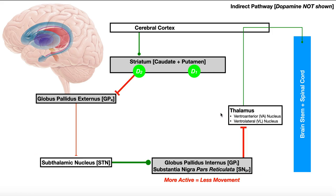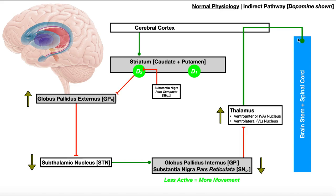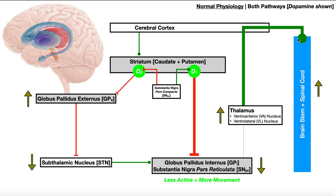Instead of totally suppressing a movement, we're going to mostly suppress it — this is how dopamine can fine-tune everything. Dopamine from the substantia nigra pars compacta modulates both pathways: the direct pathway to get a little more movement, and the indirect pathway to also get a little more movement. This is the normal physiology, and you have to understand this before you can look mechanistically at Parkinson's disease. Once we get this, we can look at Parkinson's and understand why there is difficulty initiating movement. Hopefully this video gave you a good understanding of the direct and indirect pathways and how the substantia nigra and dopamine impact those pathways. Thanks for tuning in.